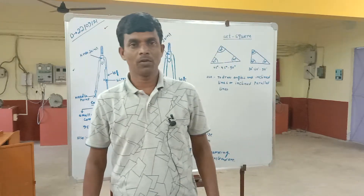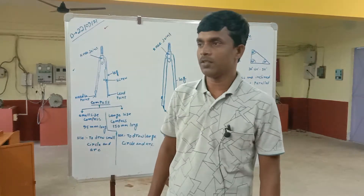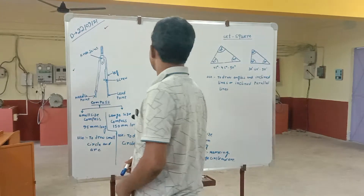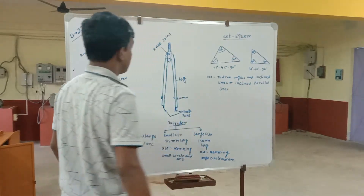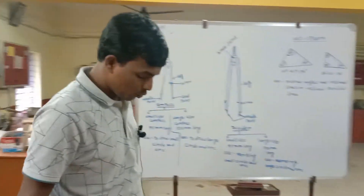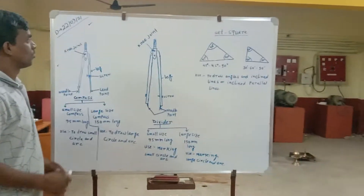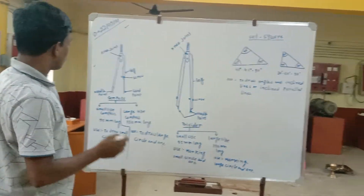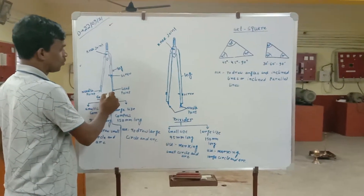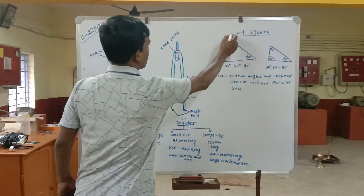Hello students, welcome to our YouTube channel. Today I will show you the 3rd instrument of engineering drawing. The first instrument is compass, the second is divider, and the third is set square.